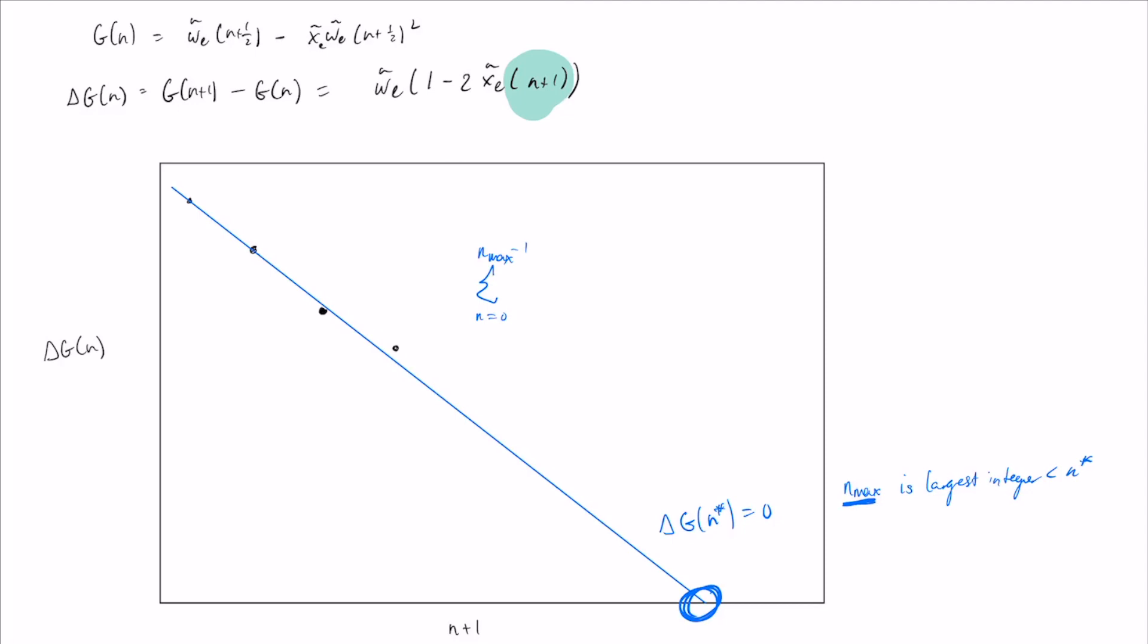So this is the total energy difference between the maximum bound state and the zero state. This is equal to g(n_max) minus g(0).